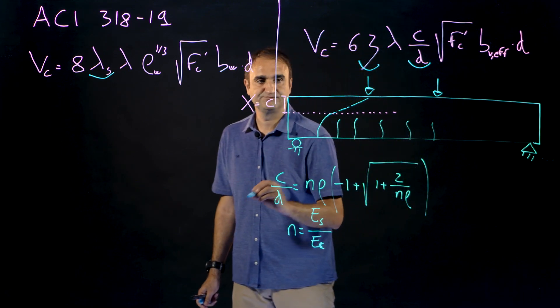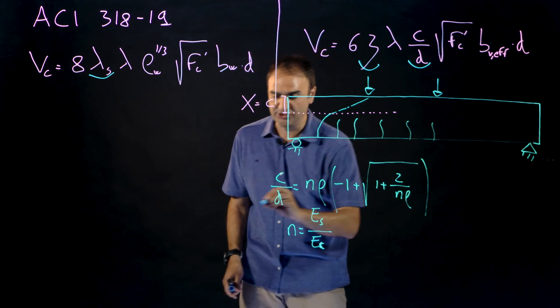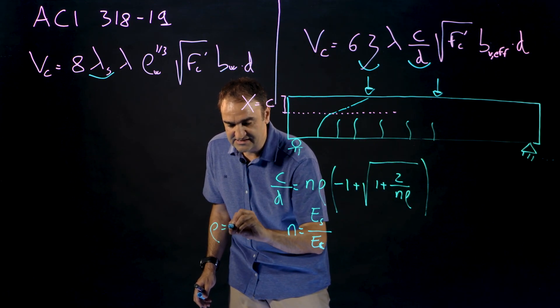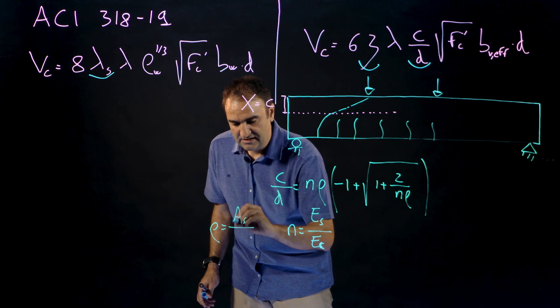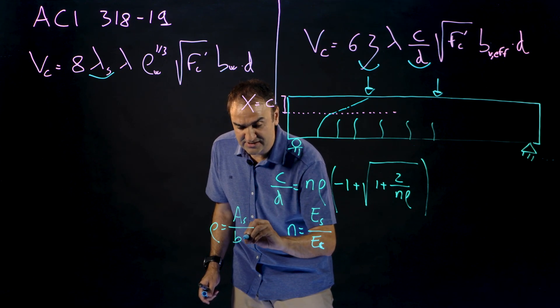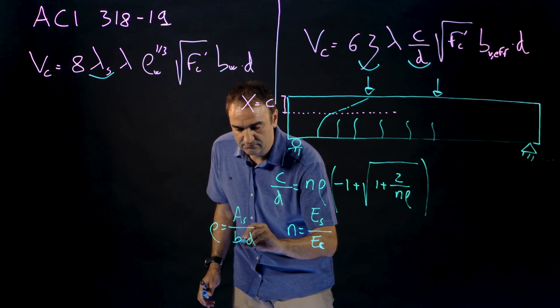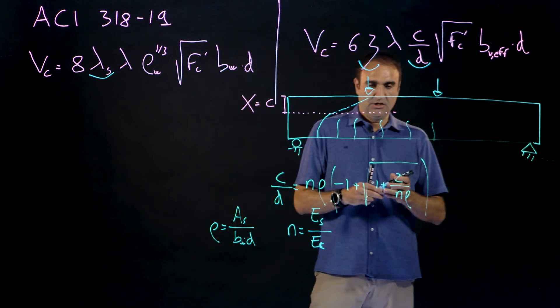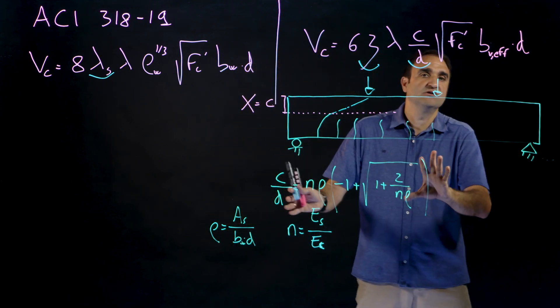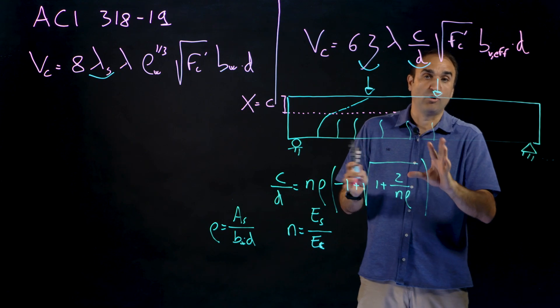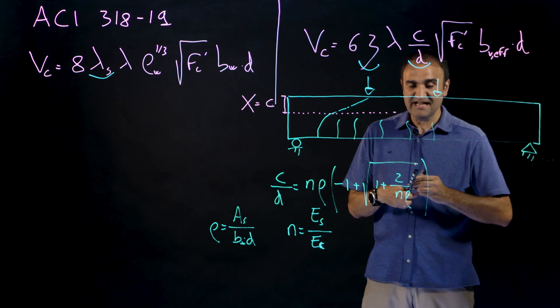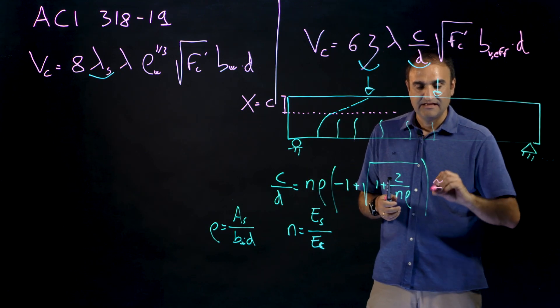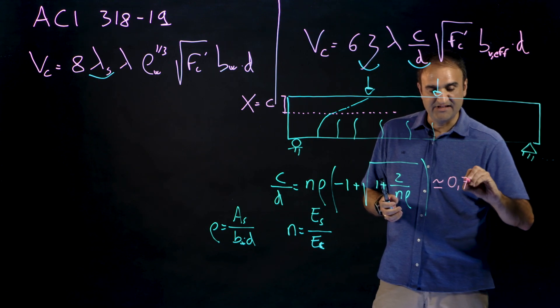Where n is the modular ratio so it's the elastic modulus of the steel and the elastic modulus of the concrete, and rho is the amount of longitudinal reinforcement. If we have here some longitudinal reinforcement, it's equal to the area of the longitudinal reinforcements over b over t. And this equation that is more or less complex can be simplified this way.